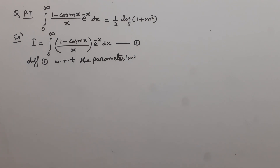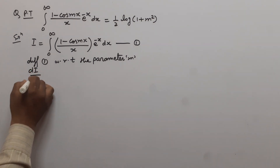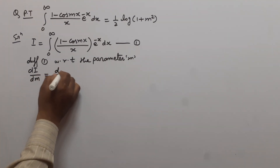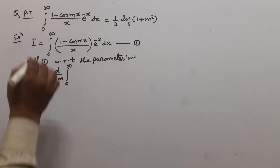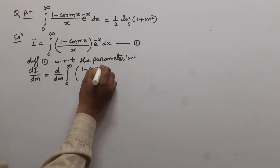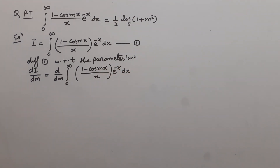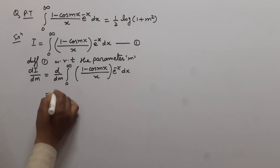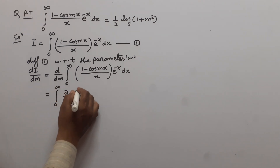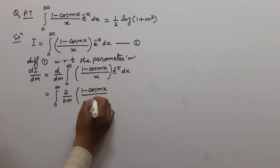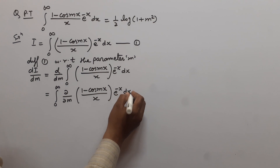So, dI/dm is equal to d/dm of the integration between the limits 0 to infinity of (1 - cos(mx)) / x multiplied by e to the power minus x dx. When d/dm goes inside the integral sign, it converts to a partial derivative.